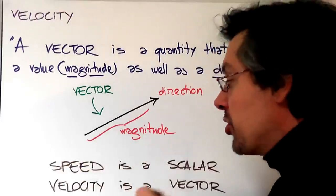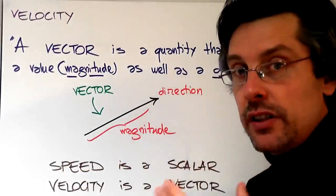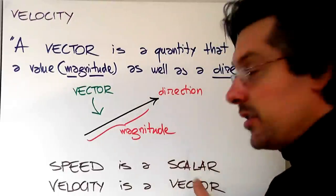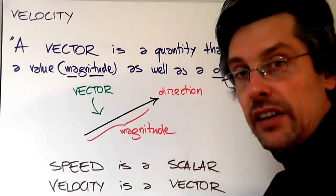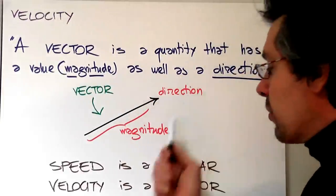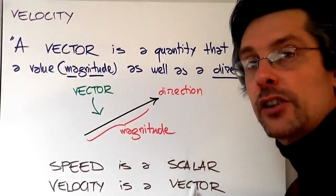Quantities like speed, which on the other hand are defined with just a number in the corresponding units, these are called scalars, while quantities like velocity, which are defined by a number and a direction, are called vectors.